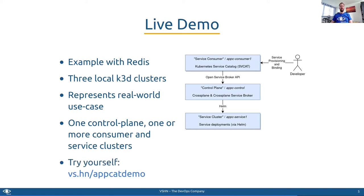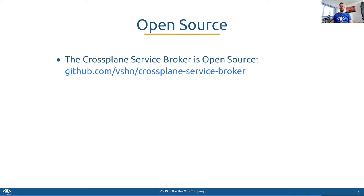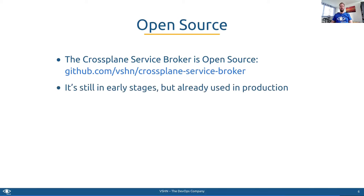If you want to try this out yourself, it's hosted on GitHub. The full demonstration is available under the URL displayed on the slides. The Crossplane Open Service Broker API is open sourced on GitHub, and it's already being used in production and will be gradually improved over time.